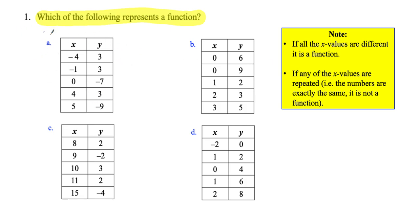Based on the definition, do you think A represents a function? Let's look at the first definition: if all the x values are different, it is a function. We're only looking at the x values. Are they all different? The x values are negative four, negative one, zero, four, and five. Yeah, they're all different — they're unique numbers. I don't see any numbers repeated. So this is a function.